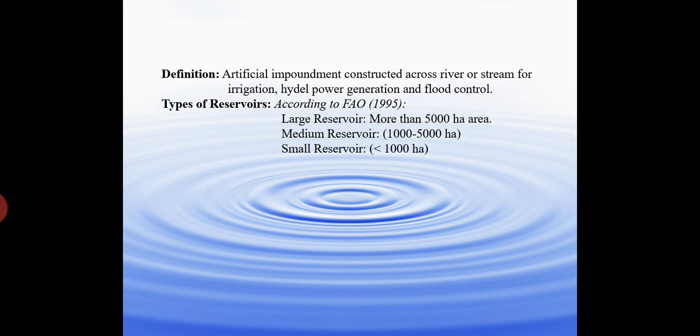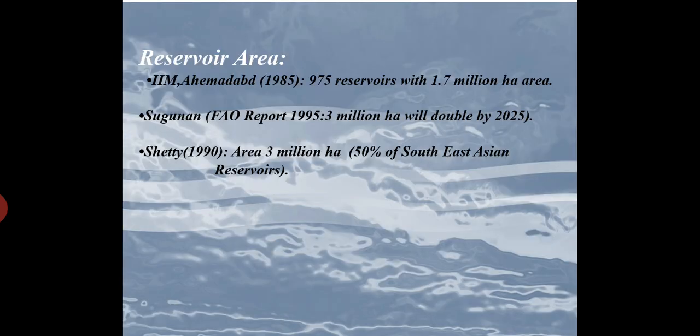In India, reservoirs are classified on the basis of water spread area. Large reservoirs have more than 5000 hectares of water spread area, medium reservoirs have 1000 to 5000 hectares, and small reservoirs are those with less than 1000 hectares of water spread area.